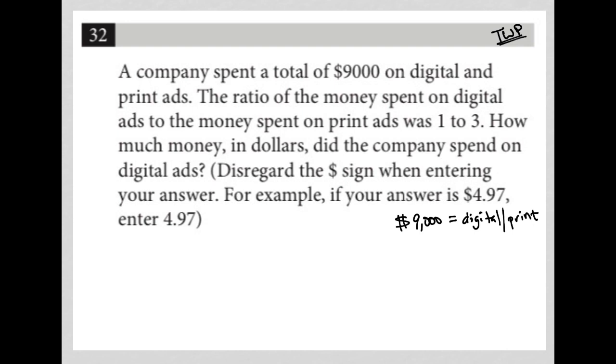The next sentence says the ratio of the money spent on digital ads to the money spent on print ads was one to three. So D to P was equal to one to three. But I know that D plus P was equal to $9,000. All right, so let's keep that in mind.